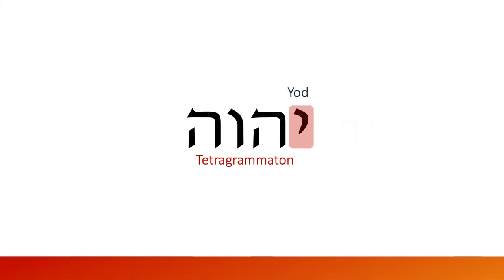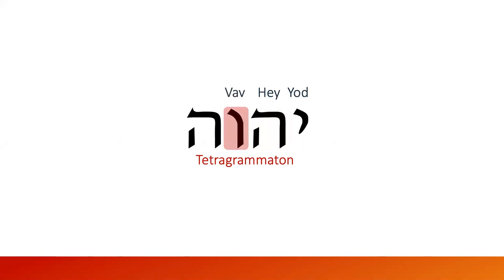So what are the letters? We said it was Y, and here you've got 'Yod' for the Y. Then you've got the 'Hey' — just like 'hey, how you doing?' That's the H. In Hebrew, you pronounce the letter Y as 'Yod,' the letter H as 'Hey,' the letter V as 'Vav,' and then 'Hey' again. So there you have Y-H-W-H, or Y-H-V-H — that's the Tetragrammaton.